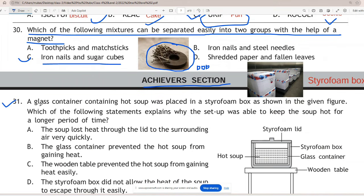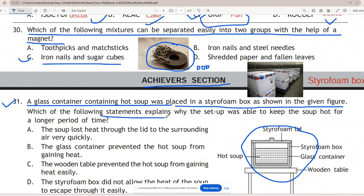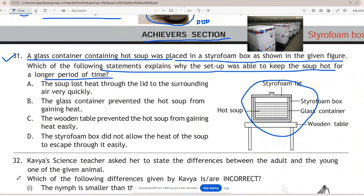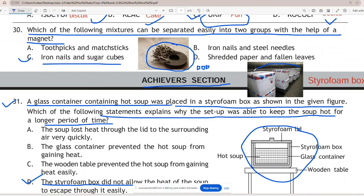Question 31: A glass container containing hot soup was placed in a styrofoam box as shown in the given figure. Which of the following statements explains why the setup was able to keep the soup hot for a longer period of time? The correct answer is D - the styrofoam box did not allow the heat of the soup to escape through it easily. Styrofoam, also known as expanded polystyrene or EPS, is used for a variety of purposes including insulation, packaging, and food containers to maintain inside temperature.